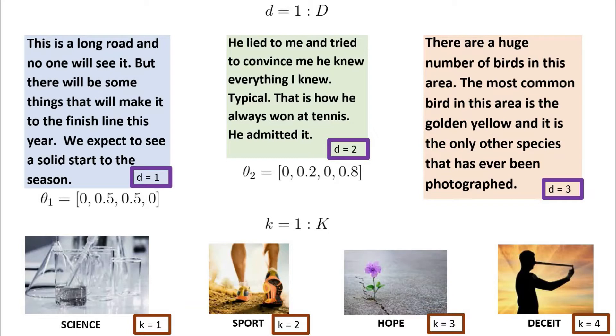Finally, we can say for document 3 it is fully about science, so we'd hope to learn the distribution theta_3 equals [1, 0, 0, 0].